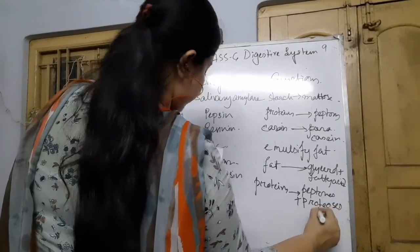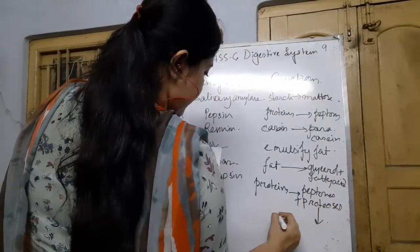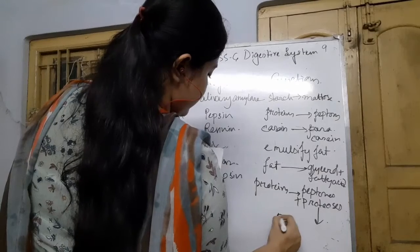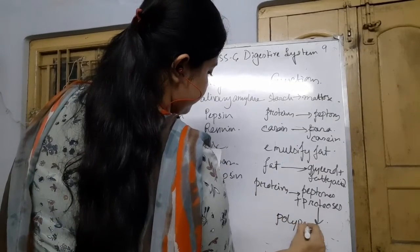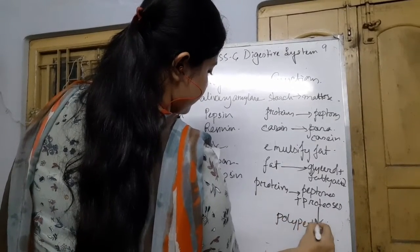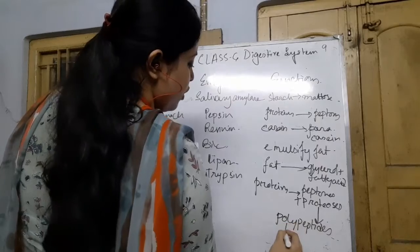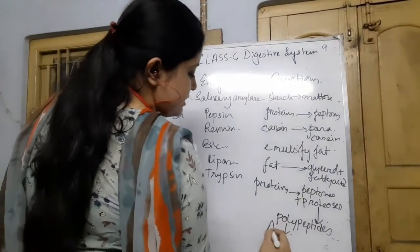From the proteases, the smaller units are polypeptides. And finally, from the polypeptides, amino acids are produced.